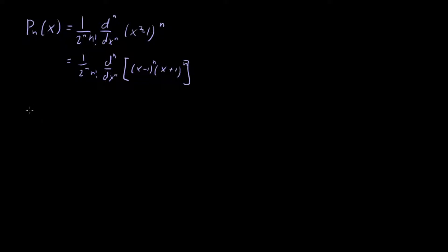Let's do that real quick. P sub 0, let's start there. P sub 0 is easy. 2^0, 0 factorial, 0 derivative of a polynomial to the 0. That's going to be equal to 1.